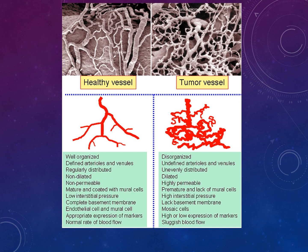Comparing healthy versus tumour vessels: a healthy vessel is well organised, with defined arterioles and venules, regular distribution, non-dilated, non-permeable, mature with mural cell coating, low interstitial pressure, complete basement membrane, and normal blood flow. Tumour vessels are disorganised, with undefined arterioles and venules, uneven distribution, dilated, highly permeable, premature and lacking mural cells, high interstitial pressure, incomplete basement membrane, mosaic cells, and sluggish blood flow.